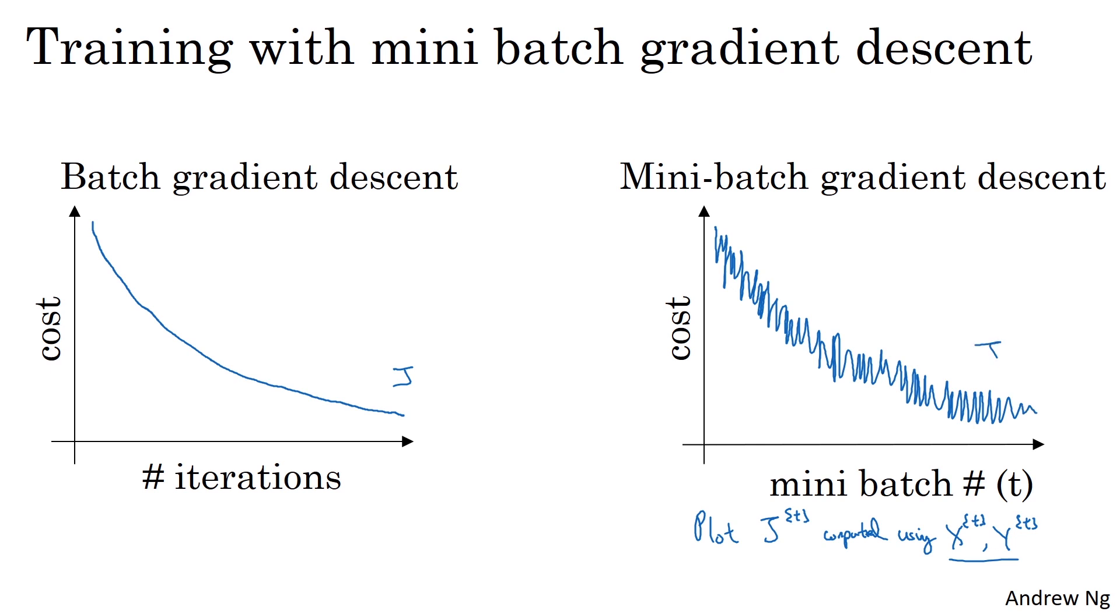So if you plot jt as you're training mini-batch gradient descent, maybe over multiple epochs, you might expect to see a curve like this. It's okay if it doesn't go down on every iteration, but it should trend downwards.